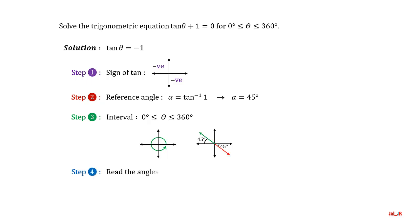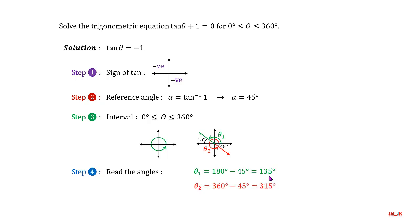Fourth step: read the value of the angles. The first θ is 180 − 45 = 135 degrees. The second θ is 360 − 45 = 315 degrees. Finally, we conclude the answers — there are two solutions for this equation.